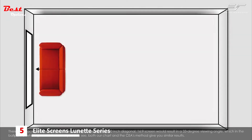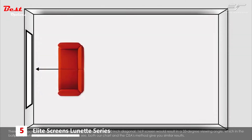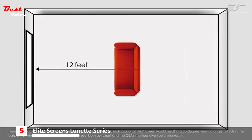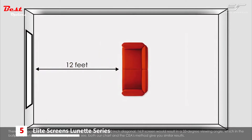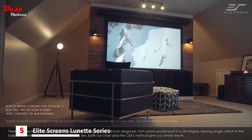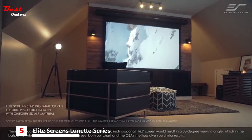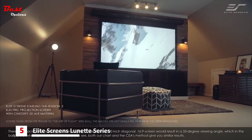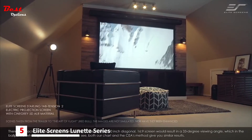Therefore, placing your seating position roughly 12 feet back from the 100-inch diagonal 16x9 screen would result in a 33-degree viewing angle, which is in the ballpark of where you wish to be. As you can see, both our chart and the CEA's method give you similar results.